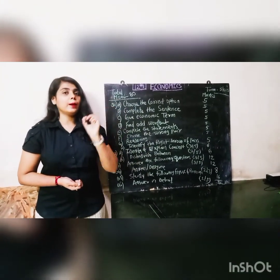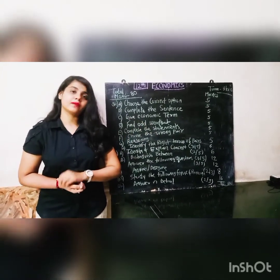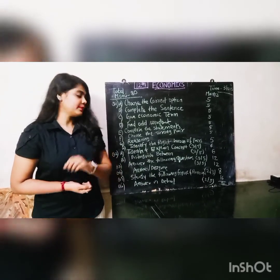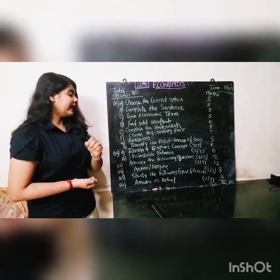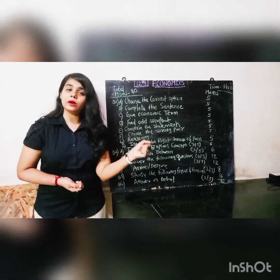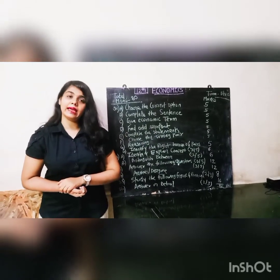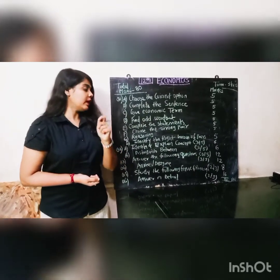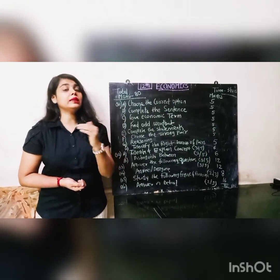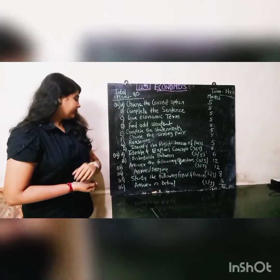Question number three is Answer the Following Question. Five questions will be given, you have to attempt three, and the marks will be twelve — so one question carries four marks. Question number four is Agree or Disagree, similar to True or False in SP and OC. It carries twelve marks — five statements will be given and you have to attempt three, each for four marks.